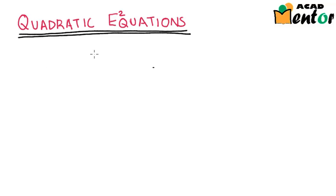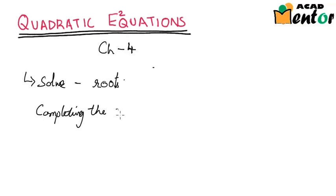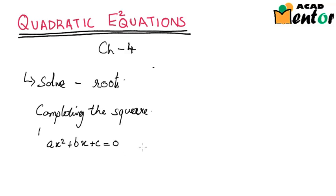Hi there. We were talking about quadratic equations, which is chapter 4 of the NCRT book, and as part of this chapter we saw how to solve quadratic equations — meaning how to find the roots of any quadratic equation. We saw a lot of methods, and lastly we saw how to solve a quadratic equation by completing the square. Now we will see if we can apply that method to find the roots of AX² + BX + C = 0, which is the general form of quadratic equations.